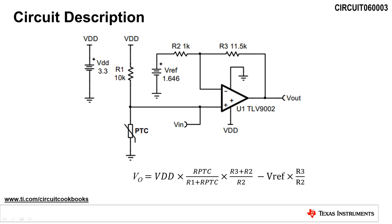VIN is amplified by a non-inverting amplifier. A reference voltage, VREF, offsets the gain, which helps utilize the full output swing of the op amp.